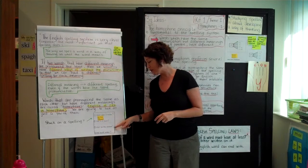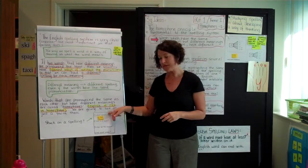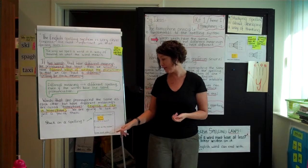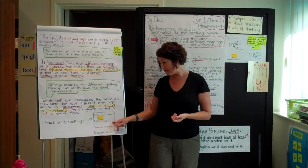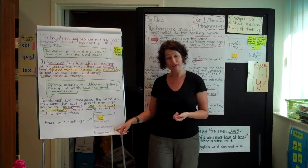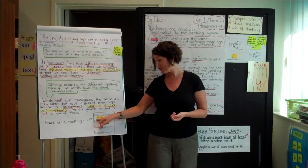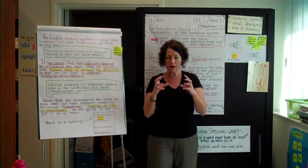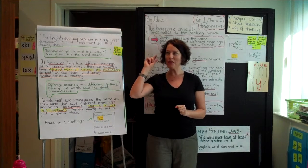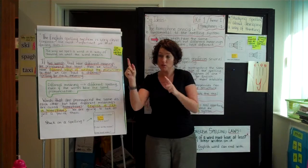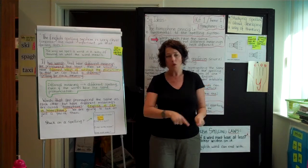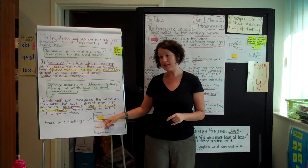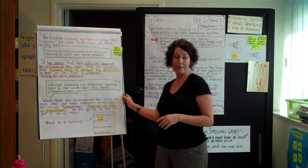We've talked about meaning being the top tier of spelling. When kids are stuck on a spelling, the questions they need to ask are: what does it mean, how is it built, what are its relatives, and what sounds matter? I'm also wondering whether 'are there any homophones?' should be inserted in there somewhere, because homophones are very frequent. Figuring out what the other word would be — maybe you know that spelling — can clue you into the spelling you're missing, or just knowing there's another one will help you see it in your mind.